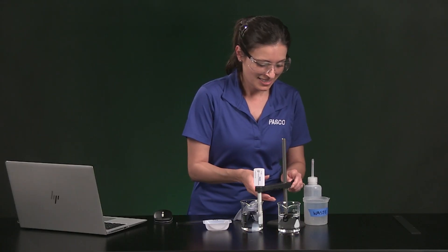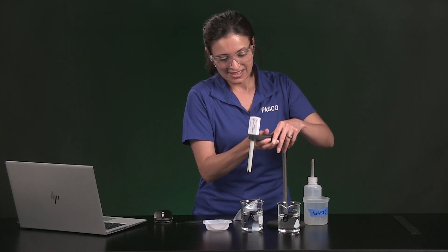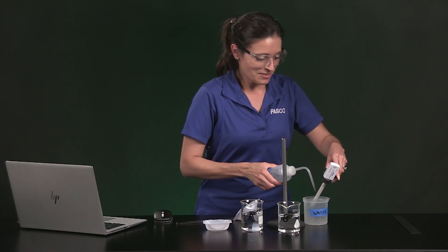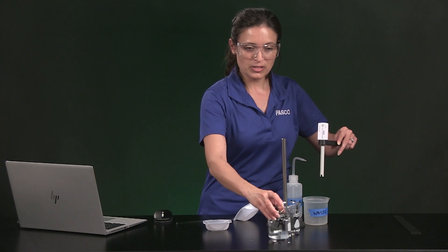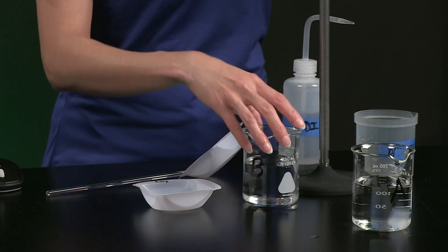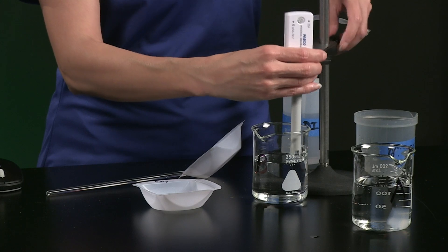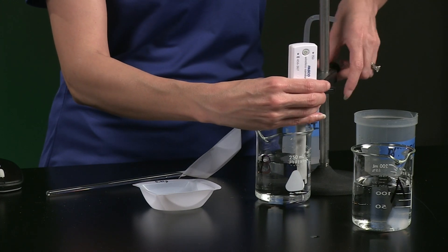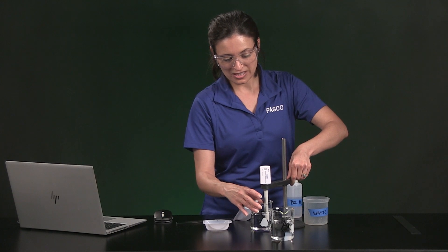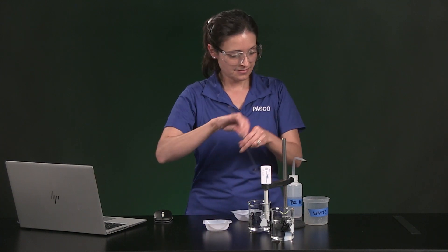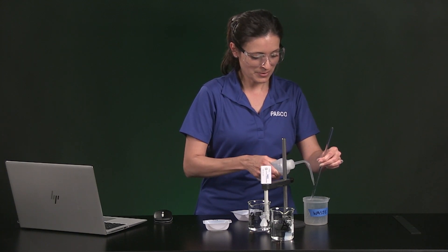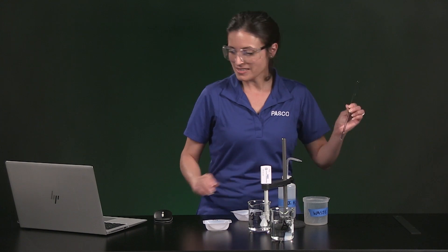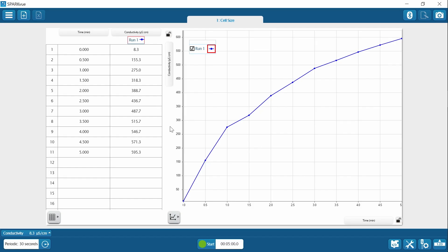Let me set up the next system. I have to clean the conductivity sensor with some distilled water. I'm going to switch to a new beaker of 150 mL of distilled water. I need to rinse my stirring rod with distilled water.